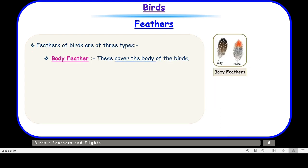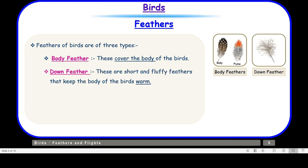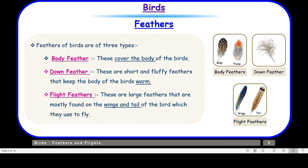Now let us take up the different types of feathers. Feathers of birds are of three types. First are body feathers — these cover the body of the bird and give it shape. Then we have down feathers — these are short and fluffy and keep the body of the bird warm. And then we have flight feathers — these are large feathers mostly found on the wings and tail of the bird, which the bird uses to fly or change direction.